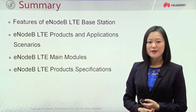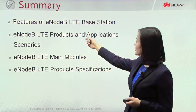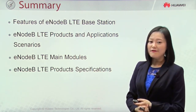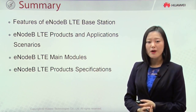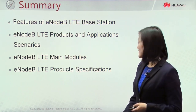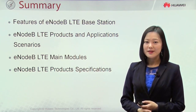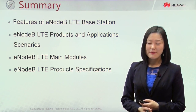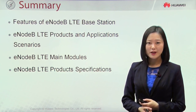That's all for this chapter's content. We introduced the features of E0B products, various products and application scenarios, also the two main modules — BBU and RF unit — and the specifications for FDD and TDD mode. In the next chapter, we will continue to introduce the hardware structure of E0B. Thanks for your time.